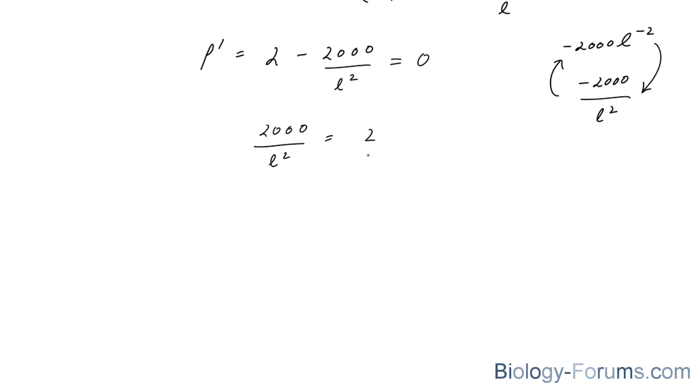Next, I will isolate for L squared. Multiply both sides by L to the power of 2, which gives me 2,000 is equal to 2 times L squared.